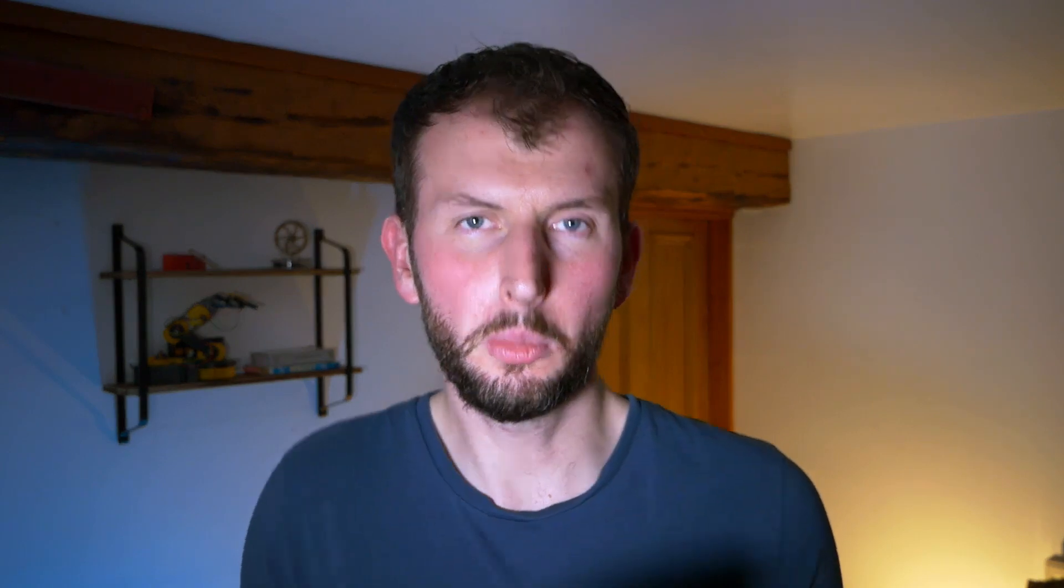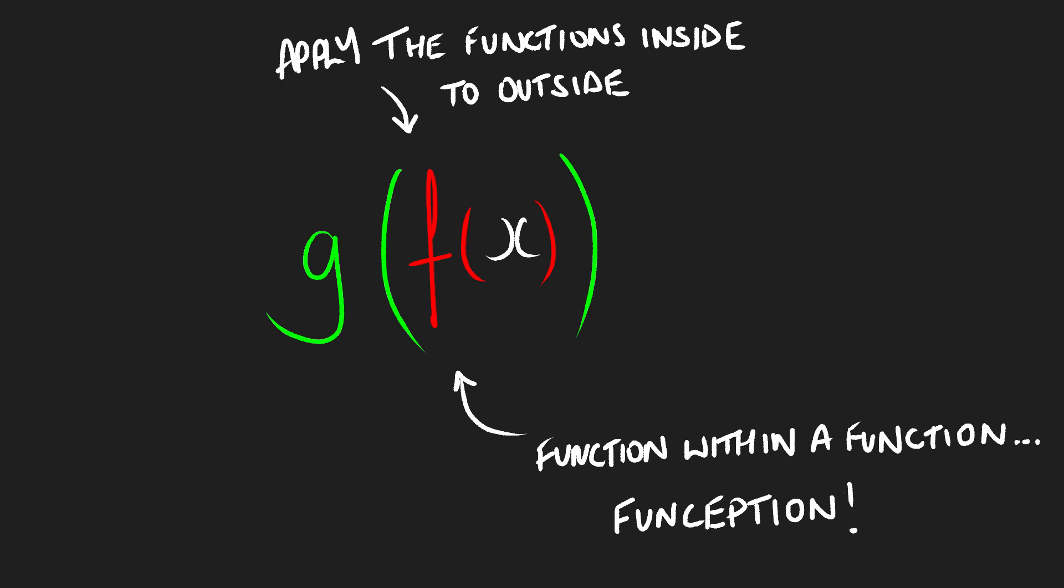And this kind of way of thinking about it is similar to composite functions. When you have a function within a function, then you are looking to do the function within that function first, and then apply a function of that function afterwards. So the whole right to left thing makes kind of sense in terms of understanding matrices as transformations, as almost like functions.